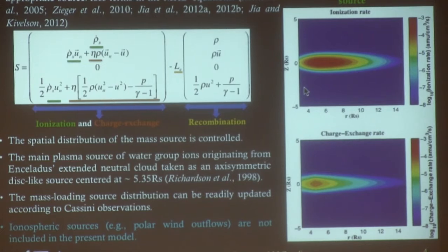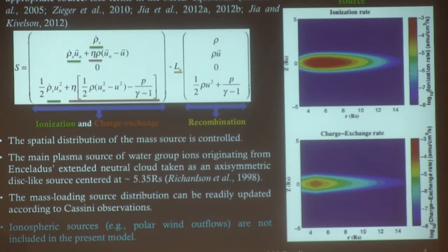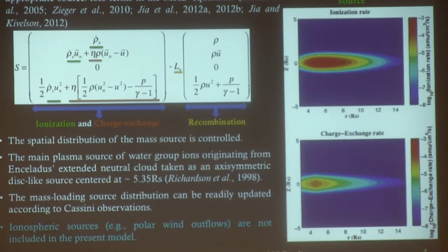This shows a cut in the meridional plane of the ionization rate, which peaks around 5 RS, slightly outward of the orbit of Enceladus. As you heard from Fran and Melissa, the neutral profile is expanded from the Enceladus orbit, and given the electron temperature distribution, the peak ionization is slightly outward. We adopt a relatively old model from Richardson et al. 1998. The bottom panel shows the charge exchange rate used in the simulation. This spatial distribution of the mass source could be easily adapted to the newest Cassini observations, which is something we're working on right now.